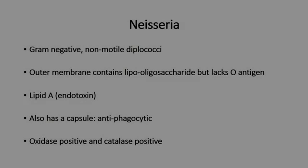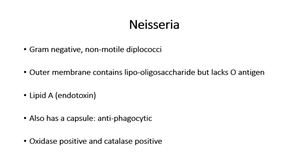That's it for Neisseria. Just recall the main characteristics of the bacteria: it's a gram-negative, non-motile diplococcus that lacks an O-antigen in its outer membrane. It has a capsule, which is one of its main ways of impeding phagocytosis. Recall its different culturing requirements, and in the next few videos, we'll talk about the diseases its species cause.